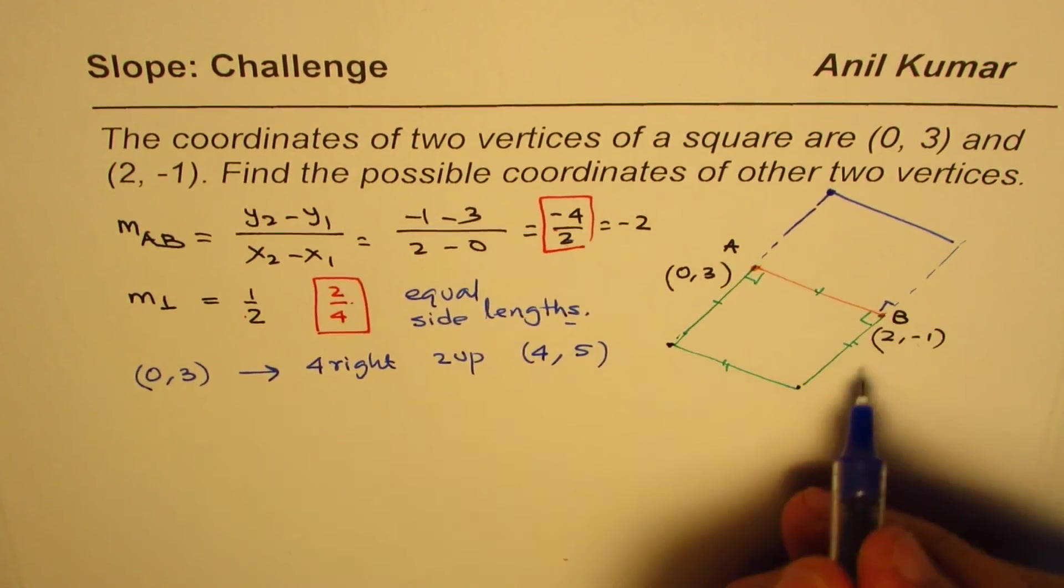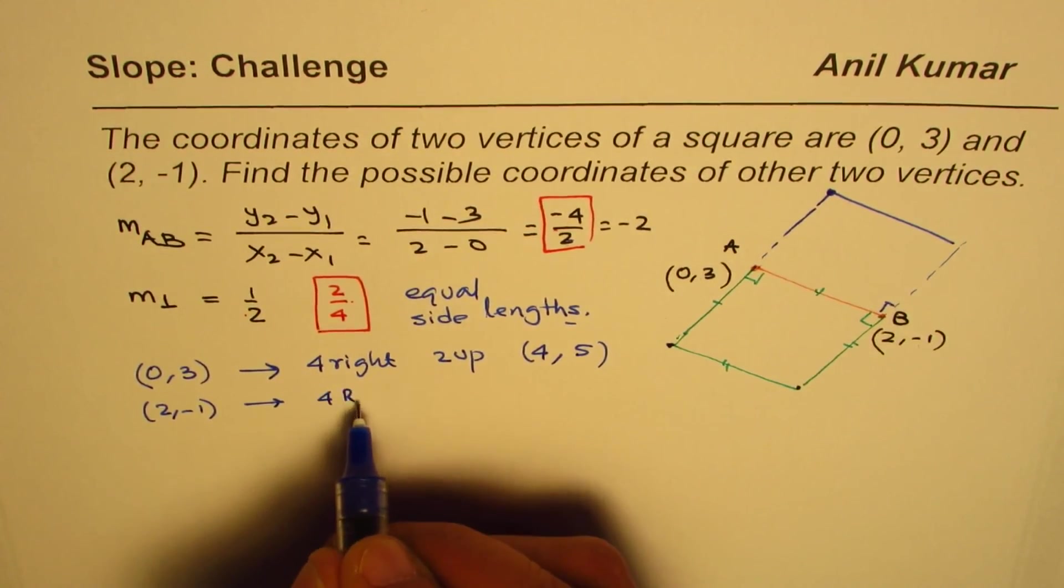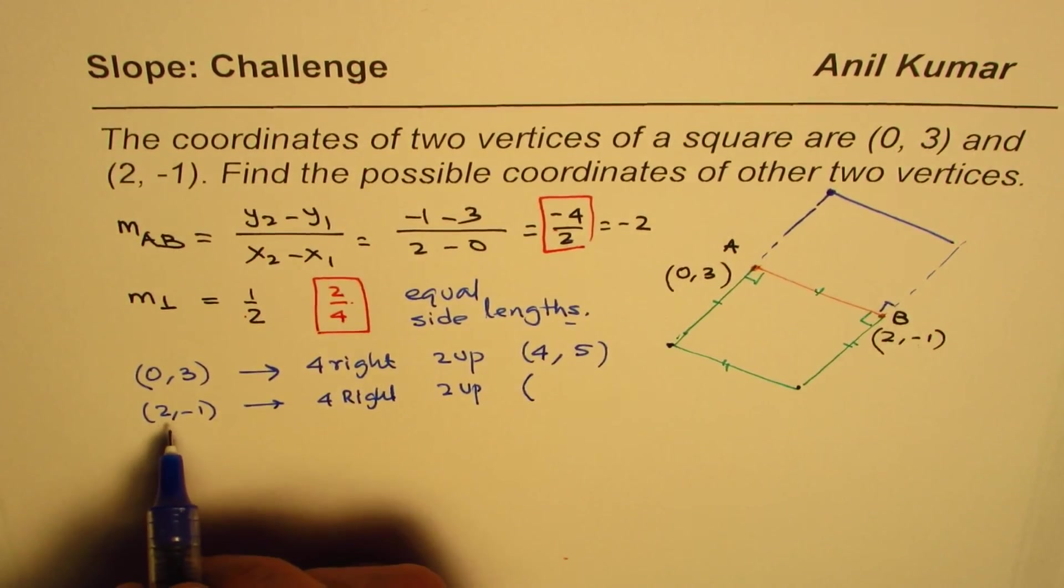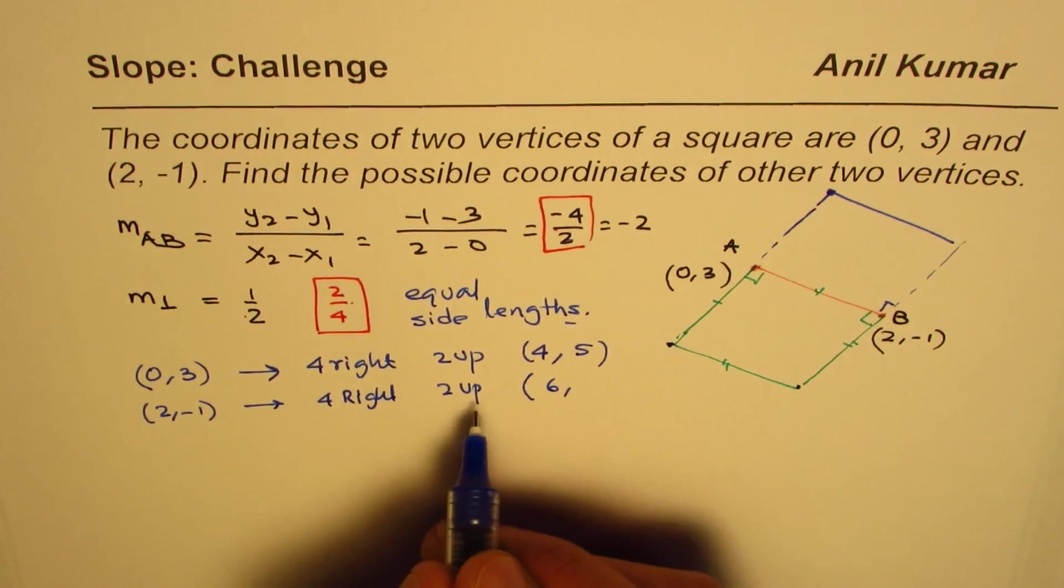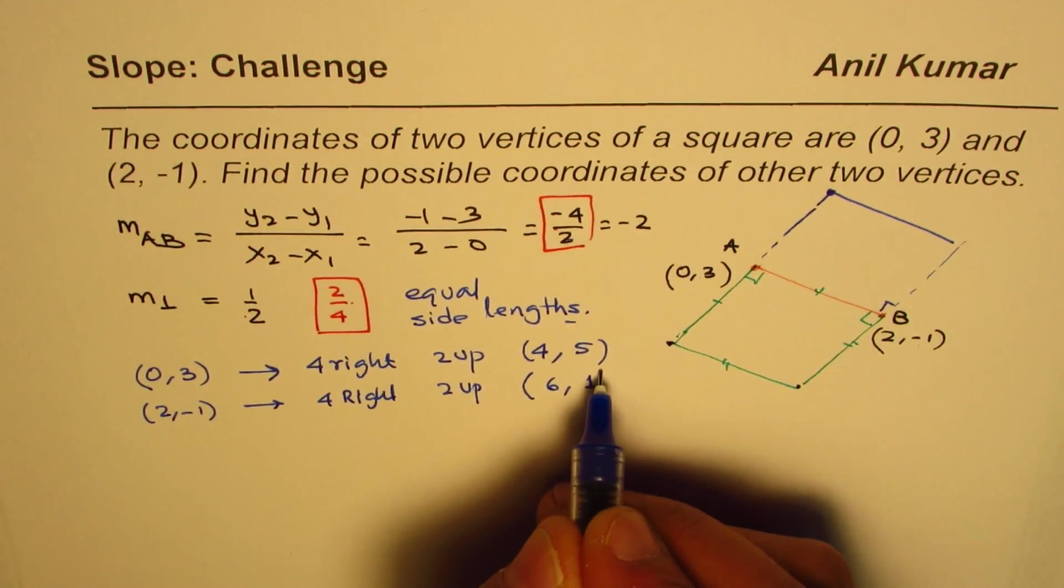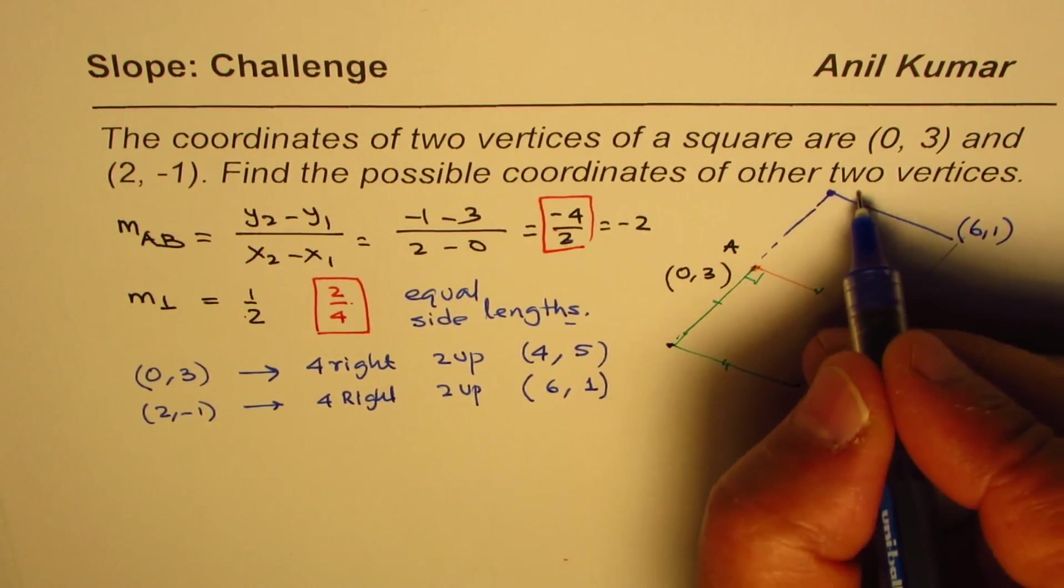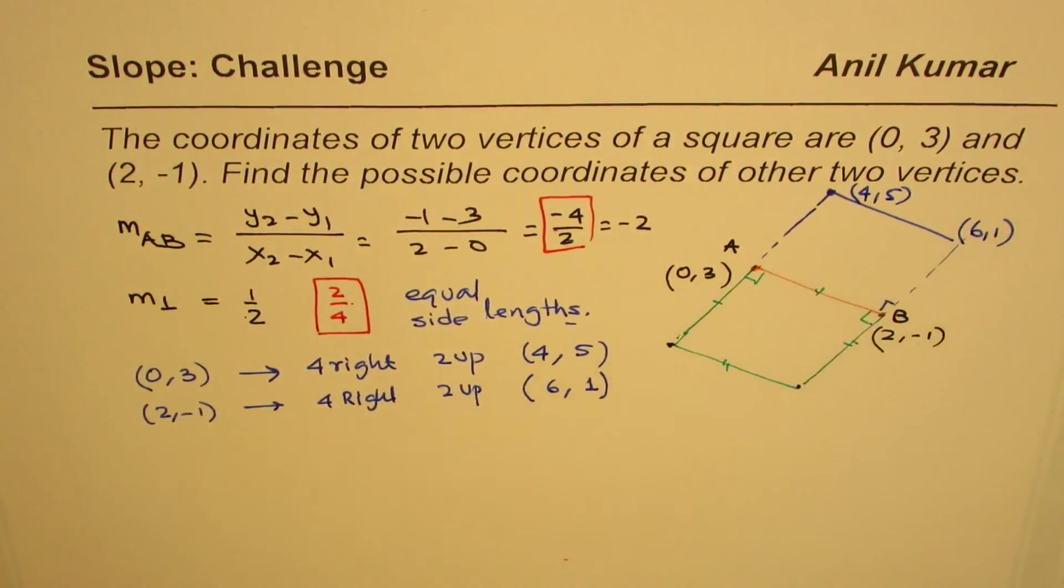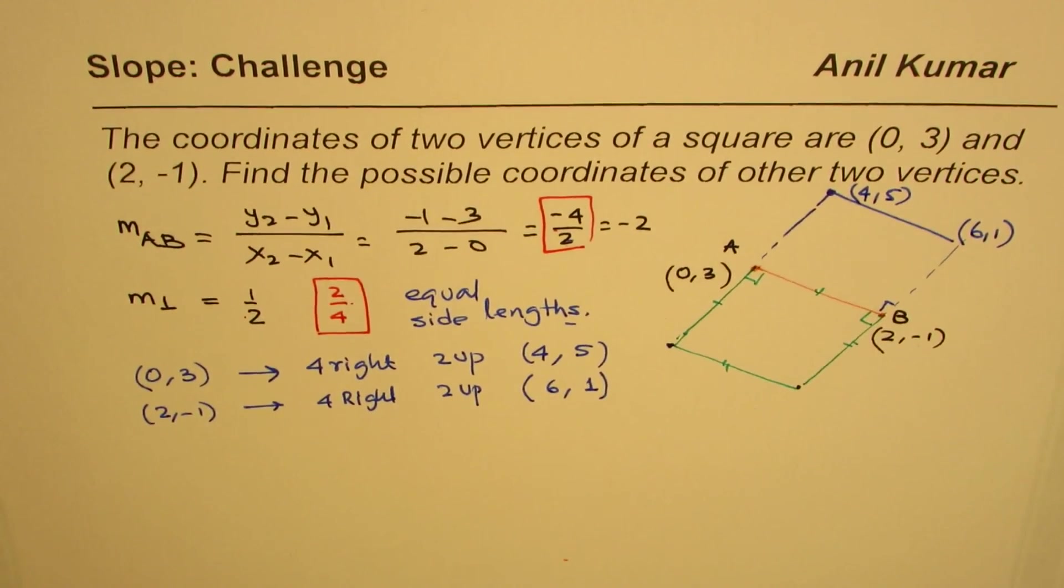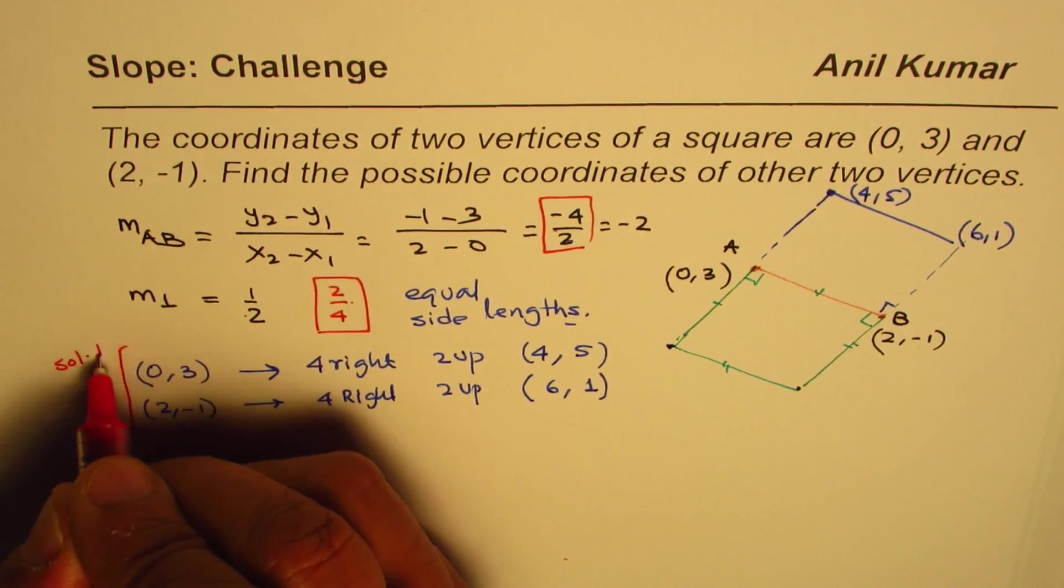Similarly, from B at (2, -1), if we go 4 right and 2 up, we add 4 to the x value, giving us 6, and add 2 to the y value, giving us -1 + 2 = 1. So we get (6, 1). That is one set of points—(4, 5) and (6, 1)—which form a square with the given points. This is solution 1.